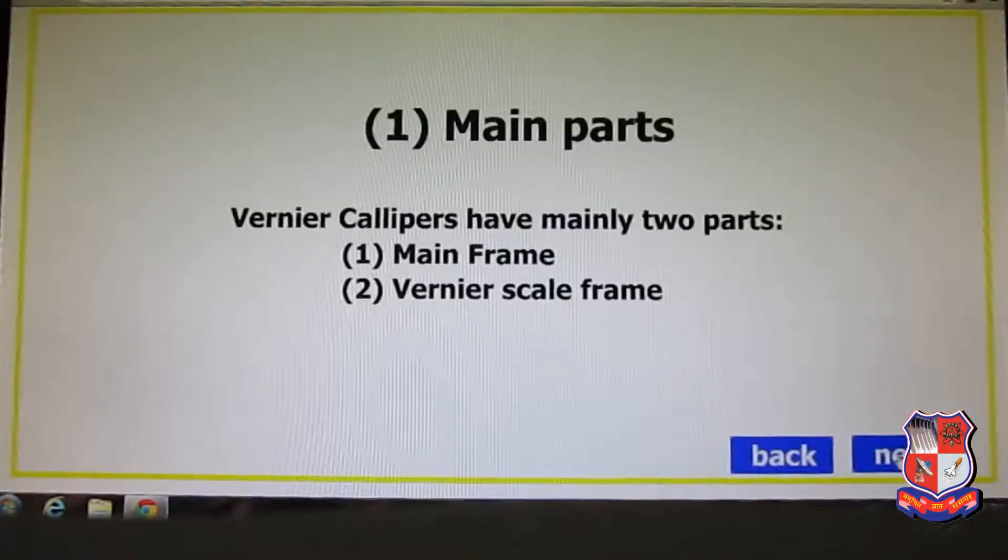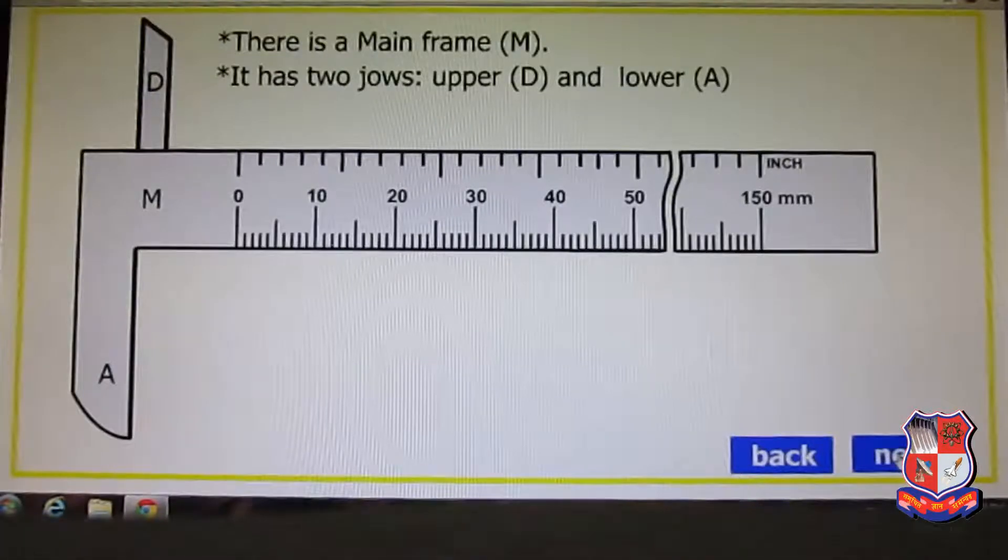First, we will study the main parts of the vernier caliper. It has mainly two parts: mainframe and vernier scale frame. Here you can see on the screen there is the main part or mainframe, called M. It has two jaws, upper D and lower A. There are two scales, upper side and lower side. The upper side scale is calibrated in inch scale and the lower side scale is calibrated in millimeter scale, or you can say in centimeter also: 15 centimeter, 5, 4, 3, 0 like that.